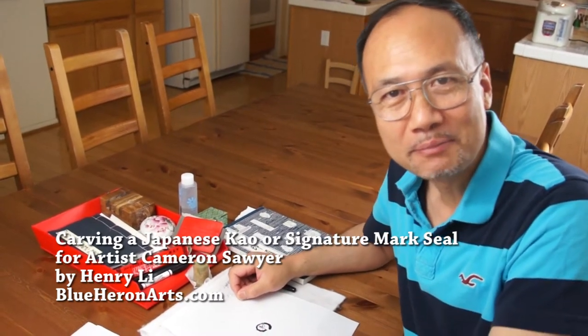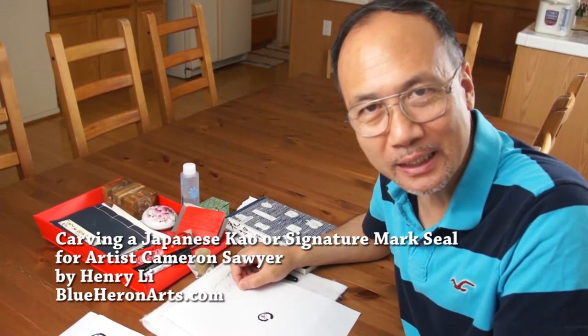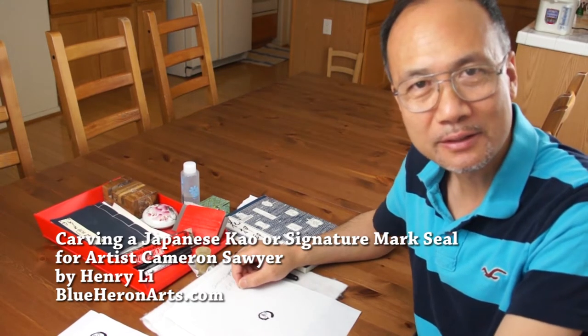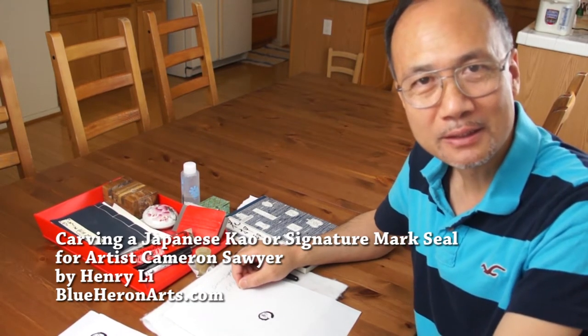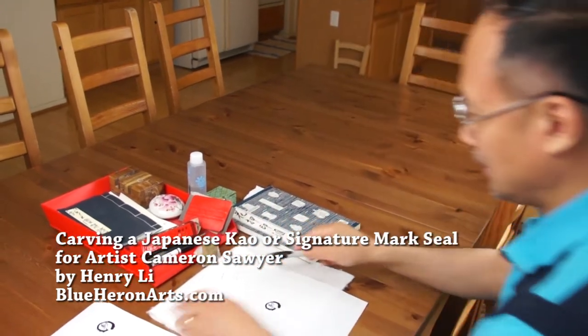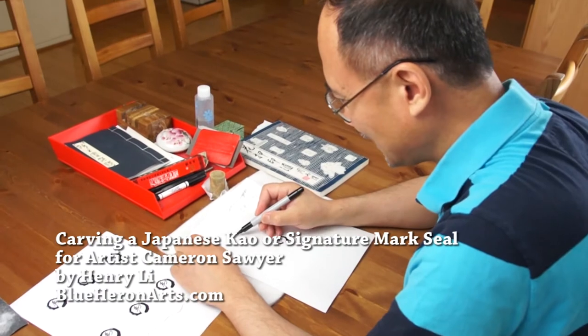Hello everyone, I'm Henry Lee. Today I'm going to show you how to do a Japanese seal with a signature mark. It's known as the khao huaya in Chinese.